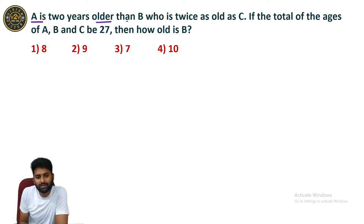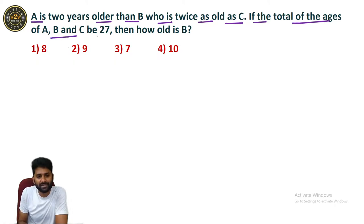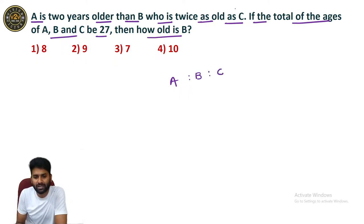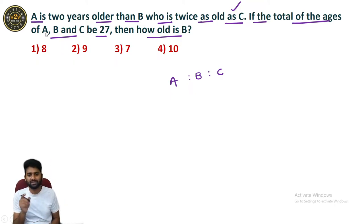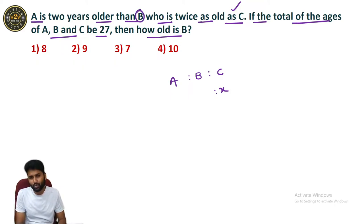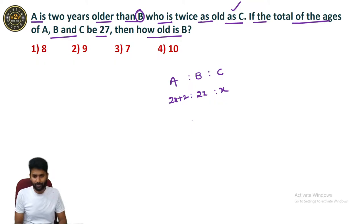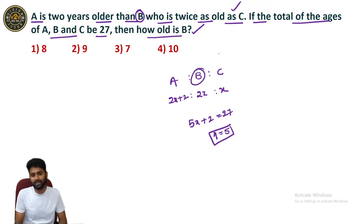A is 2 years older than B, who is twice as old as C. The total of the ages of A, B, and C is 27. How old is B? We start from C since A depends on B and B depends on C. Let C's age be x. Then B is twice as old, so B = 2x. A is 2 years older, so A = 2x + 2. Adding them: 5x + 2 = 27, so x = 5. B is 2x = 2 × 5 = 10.